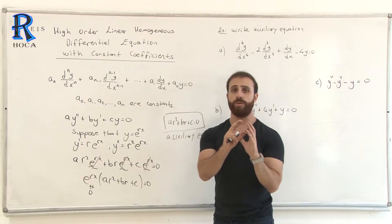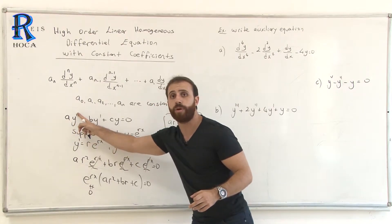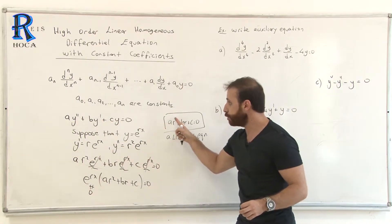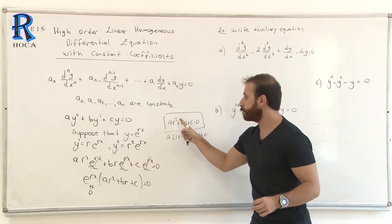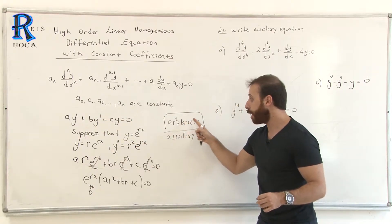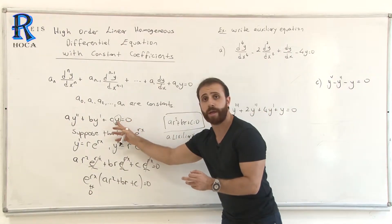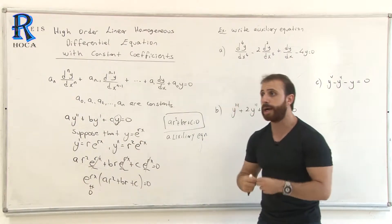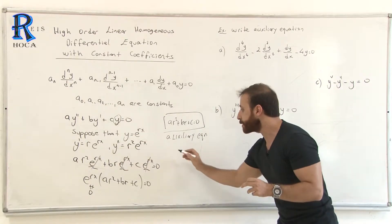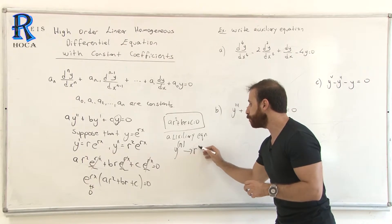We will always use this rule directly — no need to re-derive it. For the second order term a·y'', the order is 2, so we write r². For b·y', the order is 1, so we write r¹. For c·y, there is no derivative, meaning order is 0, so r⁰ = 1. That is why we write 1 instead of y.